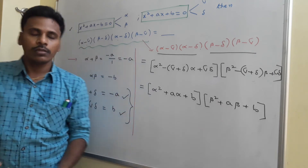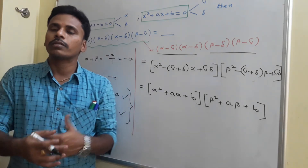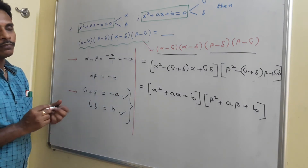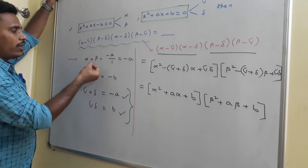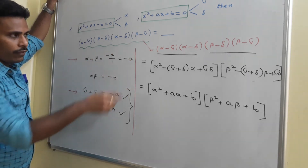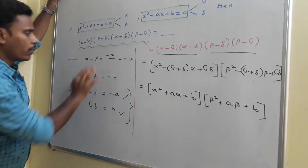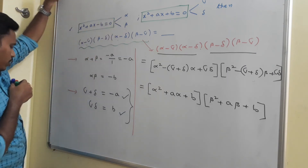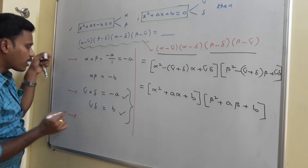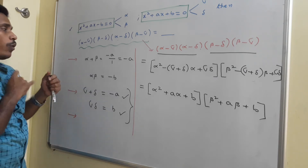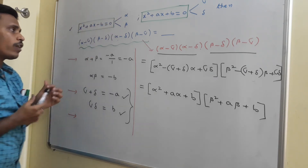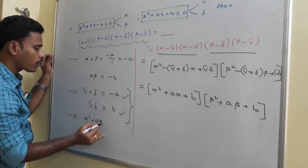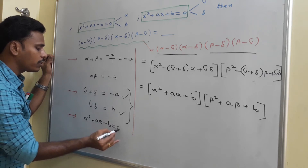Now use the basic definition of the root. Since alpha is a root of the first equation, substituting x with alpha gives alpha² plus a·alpha minus b equals 0, so alpha² plus a·alpha equals b. Similarly, since beta is also a root, beta² plus a·beta equals b.